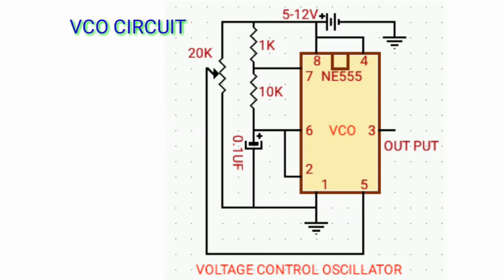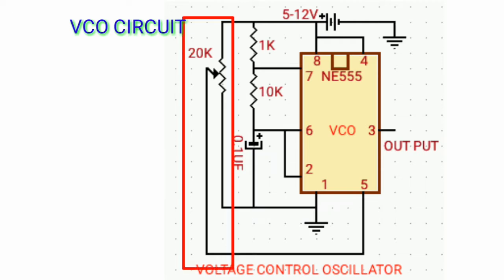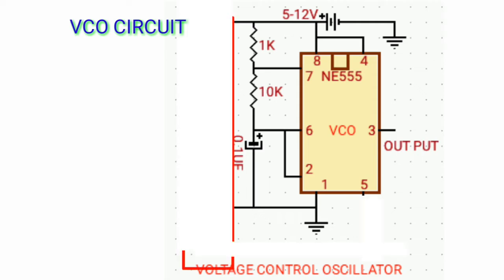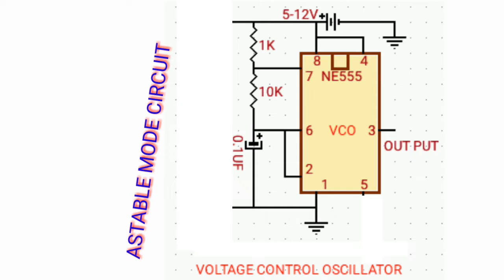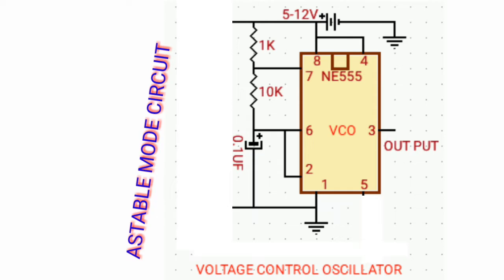So let's remove the variable resistor from the circuit. Then you can see the circuit will be an astable multivibrator. Since the circuit is in a stable mode, we have three external control circuit components: one kilo ohm, ten kilo ohms, and 0.1 microfarad capacitor. Since the components are fixed — resistor and capacitor — the output frequency will be fixed. Then we cannot control the output frequency.